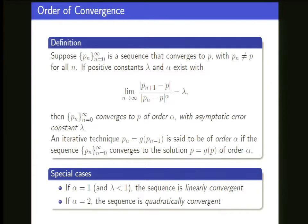Taking limits of both sides, the limit could be 1. If it does converge, you plug into the definition — the limit of |P_{n+1} minus 1| divided by |P_n minus 1|^alpha — and simplify. You find that the limit exists and equals one half if you set alpha equal to 1. That's the turn-the-crank approach to figuring out the order of convergence. It will converge to 1 if you're close enough, dividing the error by half each time — kind of like bisection.